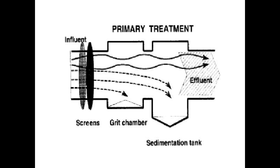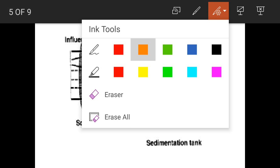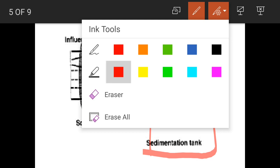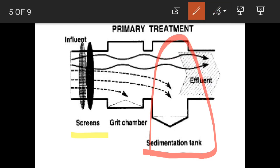Let's discuss the diagram of primary treatment. Primary treatment is used for the removal of fine suspended organic solids that cannot be removed through preliminary treatment. So fine organic solids are removed through primary treatment in the sedimentation tank. The screener and grit chamber are part of preliminary treatment, and water enters from preliminary treatment into the sedimentation tank.